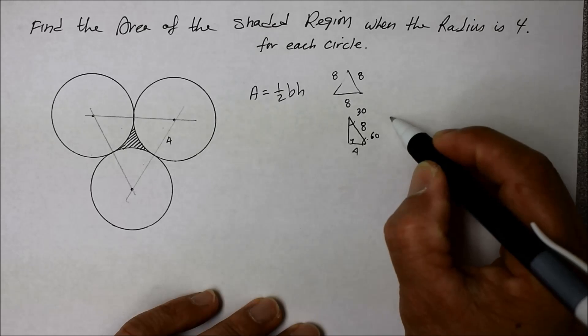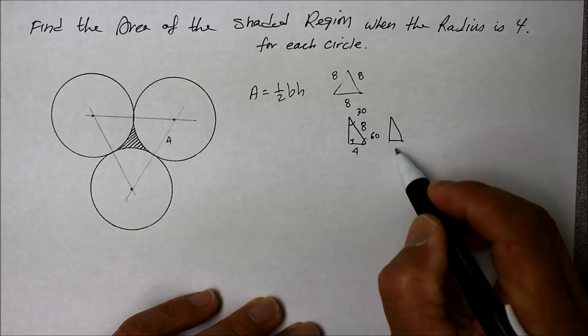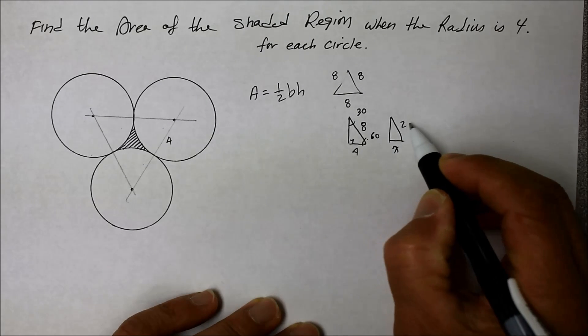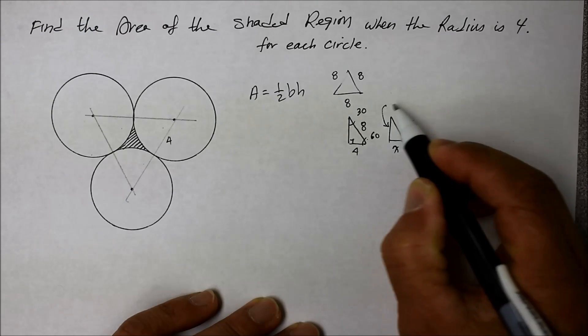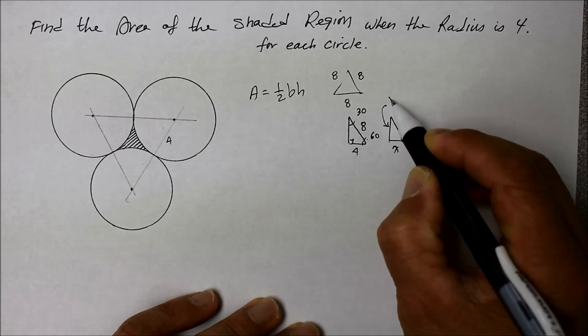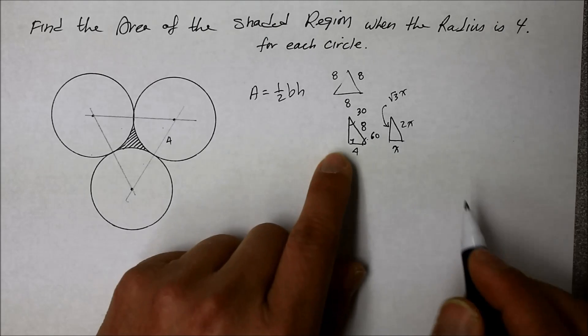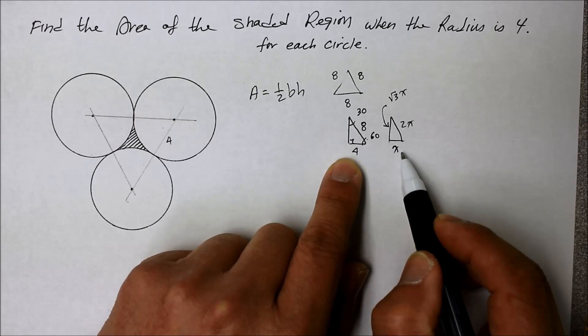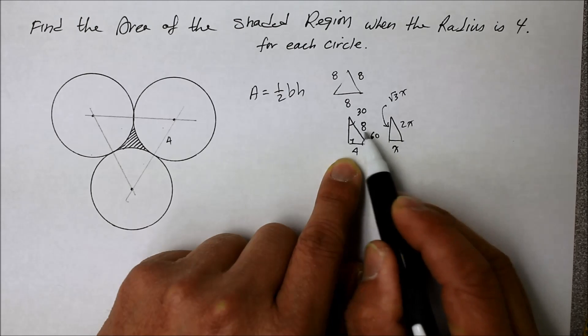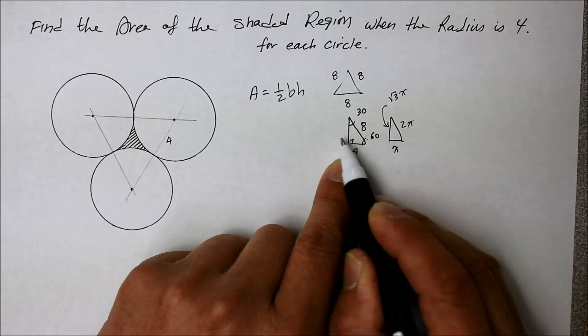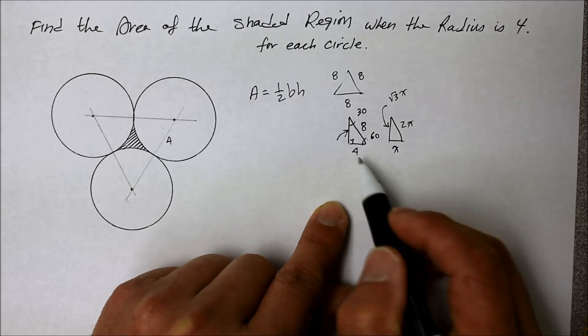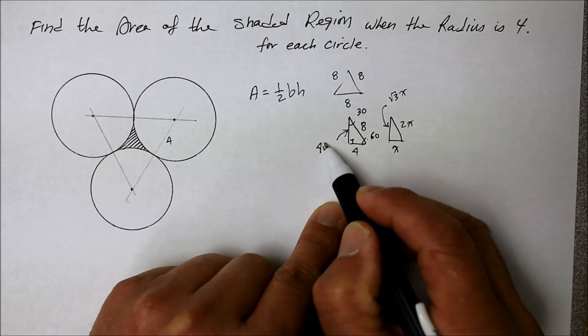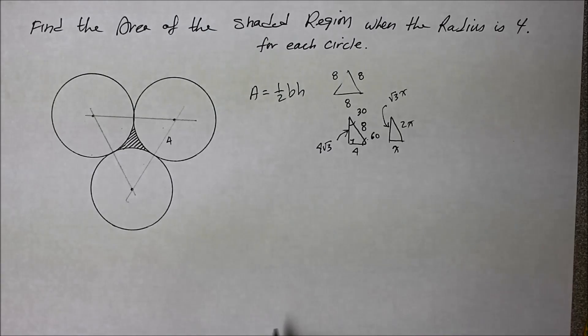Which says that if this is an x, then the hypotenuse is 2x, and the longer leg is square root of 3x. So if this is 4, and hypotenuse is 2 times 4, which is 8, which is correct, then this will be simply 4 times that, so it's 4 square root of 3. So we know the height already.